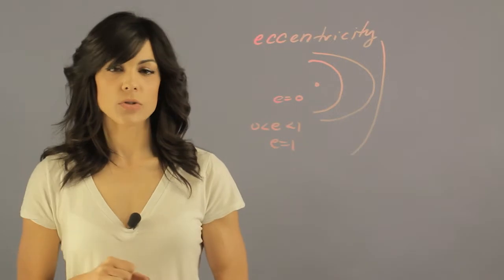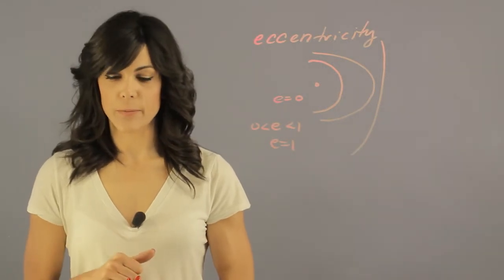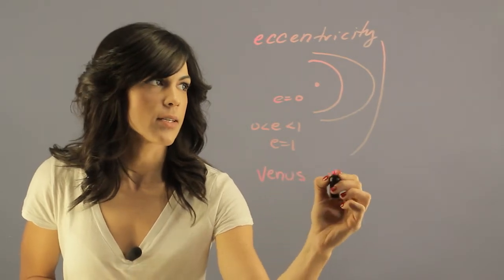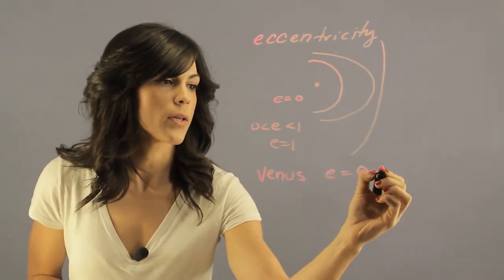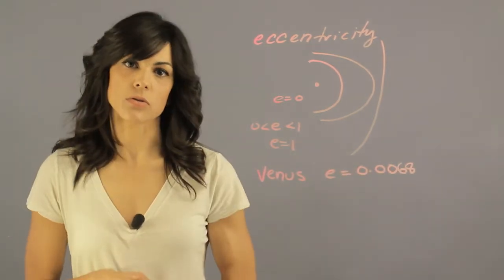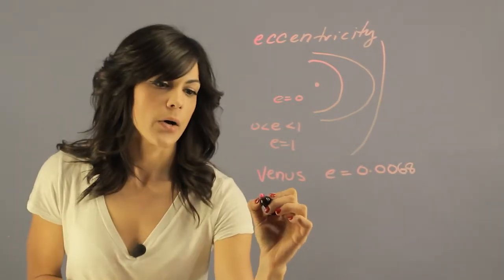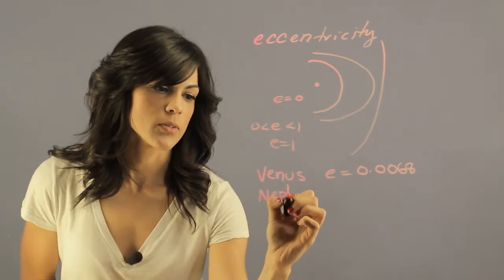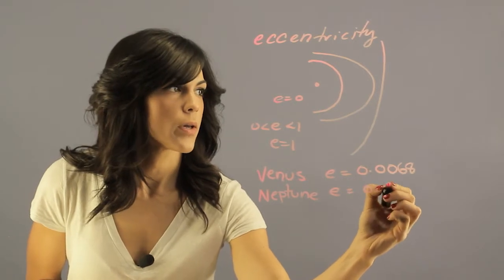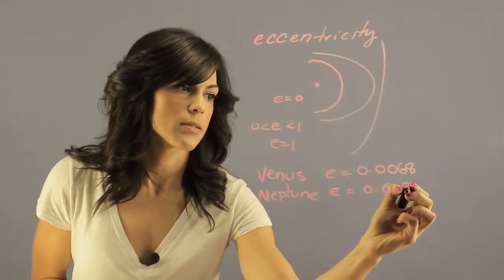The closest we have to a circular orbit is Venus, and Venus has an eccentricity of 0.0068, very close to a perfect circle. Neptune follows second, and the eccentricity of Neptune is 0.0097.